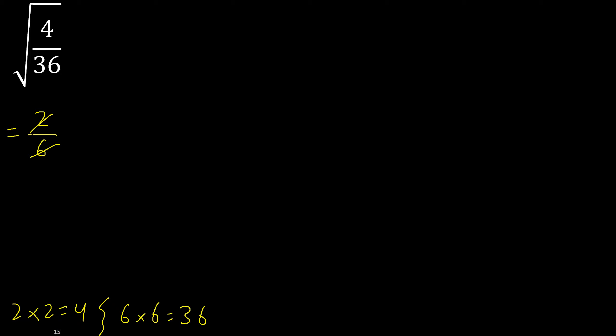The result 2/6 can be simplified because both can be divided by the same number. Divided by 2: 2 divided by 2 is 1, and 6 divided by 2 is 3. So the simplified answer is 1/3.